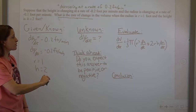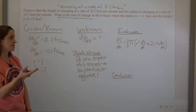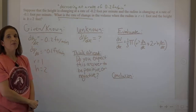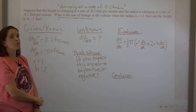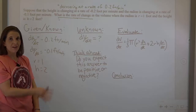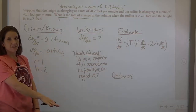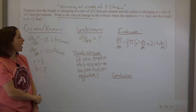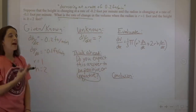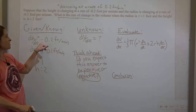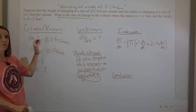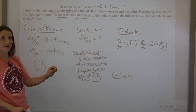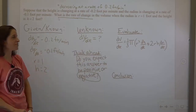Before plugging in, think about what you expect the answer to be — positive or negative. What we're trying to find is the rate of change of volume. Volume is decreasing as the water drains out the bottom, so I expect this to be negative. That will help me catch errors like failing to realize that 'decreasing' meant these were negative. You don't want to just shove a negative on the end; you want your work to actually reflect that.